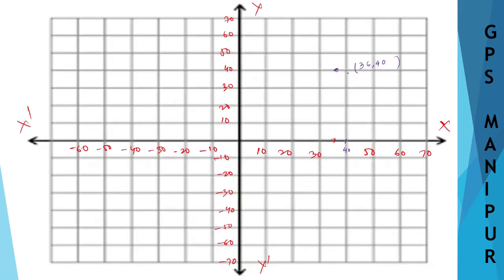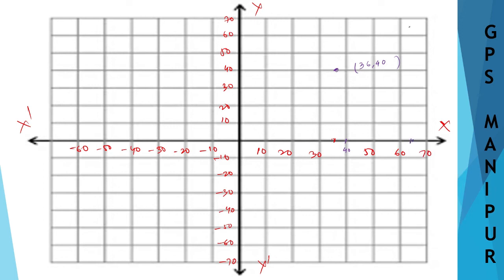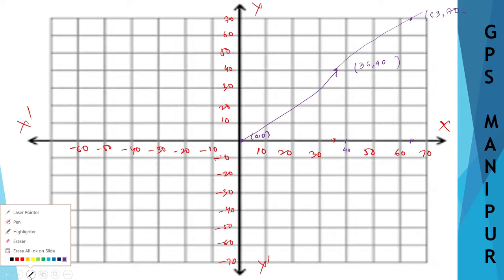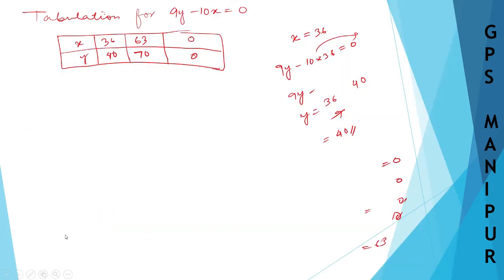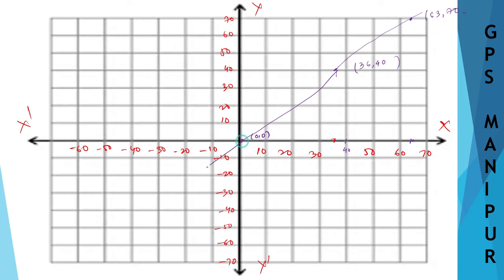The next point is x = 63, y = 70: x = 63 is near 63 on the x-axis and y = 70 is at the top. Then the origin (0, 0) is also a point. Joining all three points gives a straight line. This is the graph of 9y minus 10x = 0.